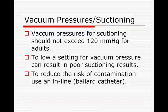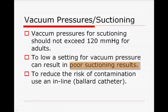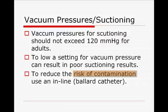The exam sometimes asks questions about vacuum pressure settings for suctioning. We typically do not like to see the vacuum pressure exceed 120 millimeters for adults. Too low a vacuum setting — such as 50, 60, or 70 — can result in poor suctioning results. The use of a Ballard catheter or inline suction catheter helps reduce the risk of contamination, reduces breaking of the circuit, and helps reduce the patient losing their saturation or the PEEP built up in the circuit.